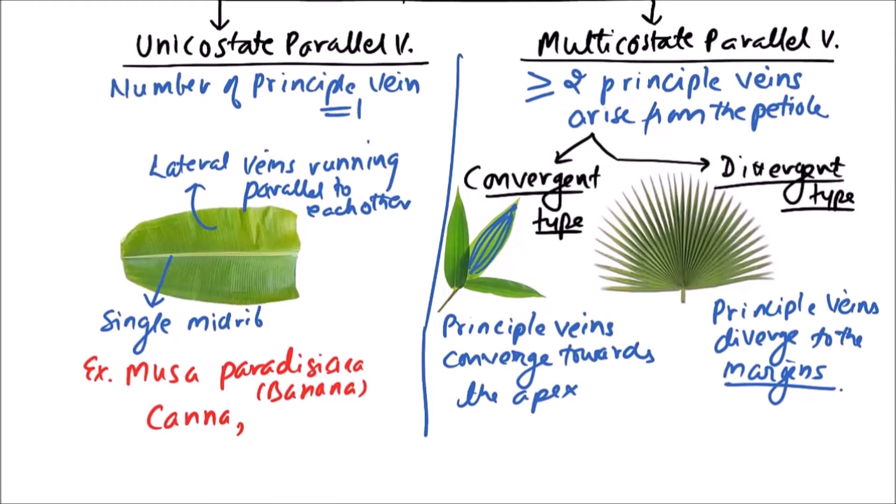The examples are, in case of convergent type multicostate parallel venation, bamboo and grasses are the common examples. While in divergent type of multicostate parallel venation, Livistonia, which is also known as fan palm is the example.